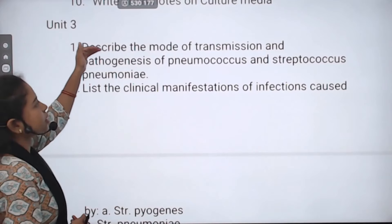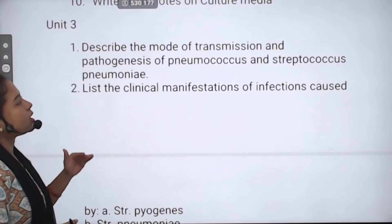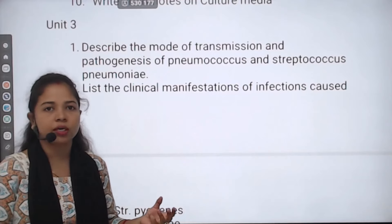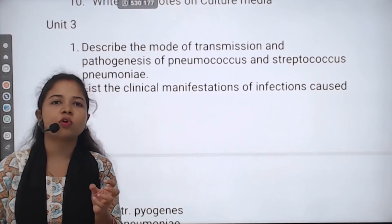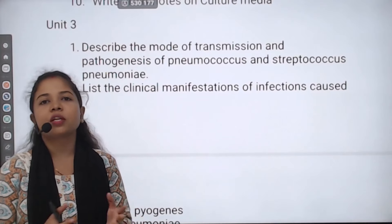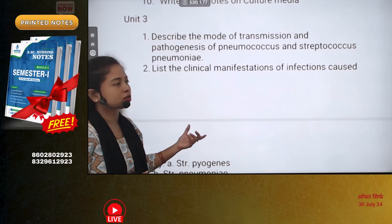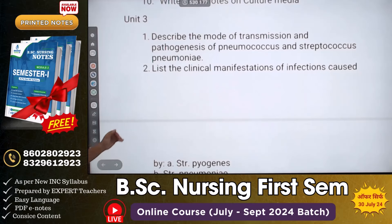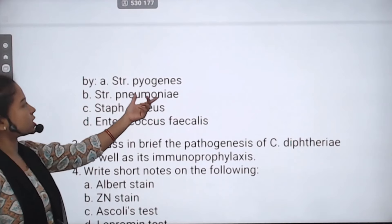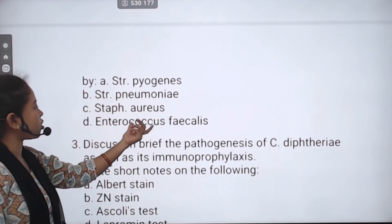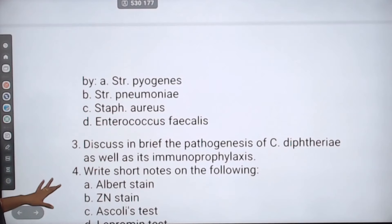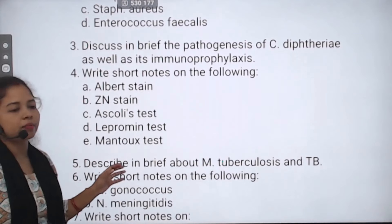Unit 3: Describe the mode of transmission and pathogenesis of pneumococcus and Streptococcus pneumoniae — these two organisms are important. Next question: List the clinical manifestations of infections caused by Streptococcus pyogenes, Streptococcus pneumoniae, Staphylococcus aureus, and Enterococcus faecalis. Write all these things in detail.